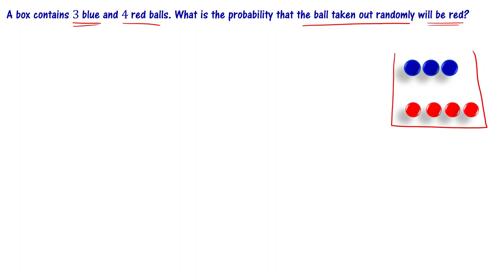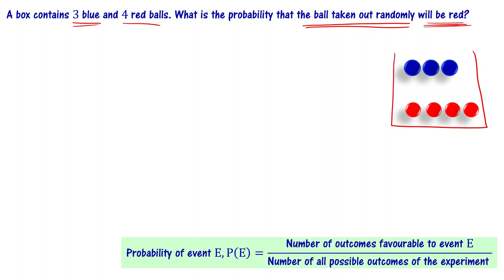What is the probability that the ball taken out randomly will be red? By the probability definition, probability of event E is defined as the number of outcomes favorable to event E divided by the number of all possible outcomes of the experiment.